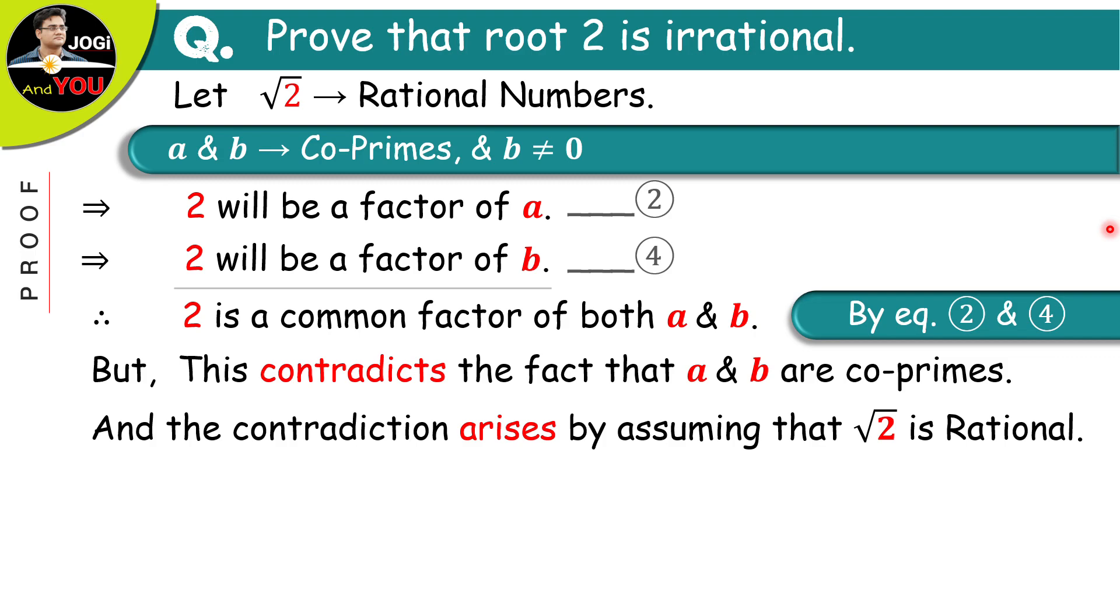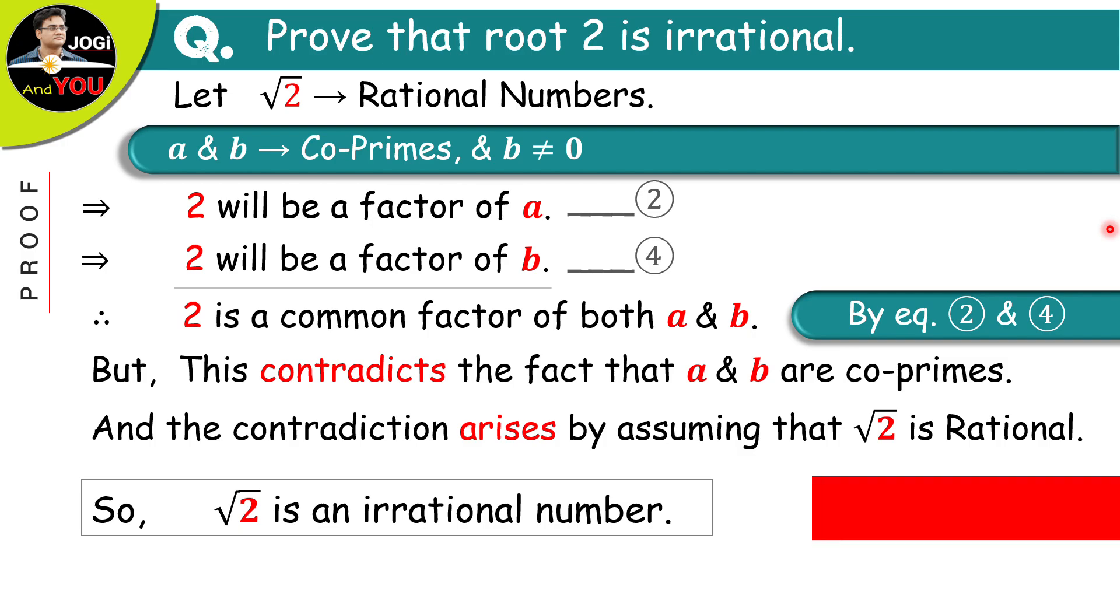So, finally, you can say that what we assumed previously is wrong and root 2 is an irrational number. And hence, it is proved.